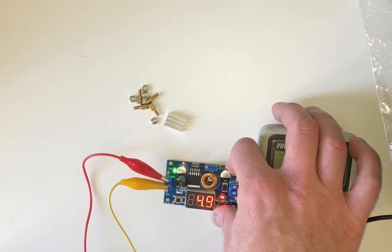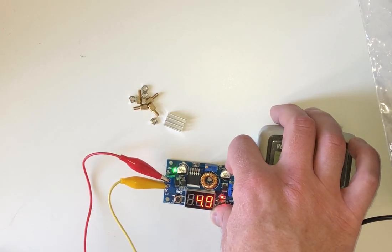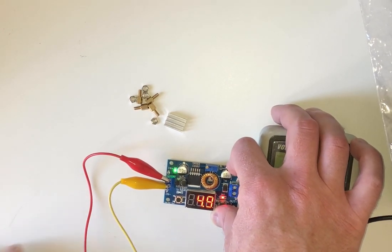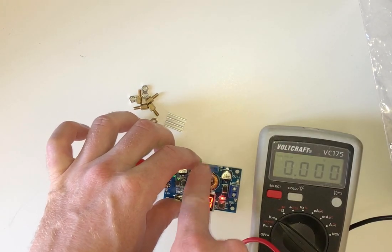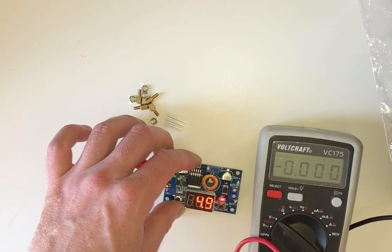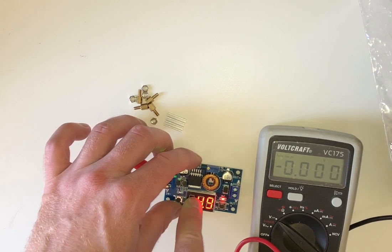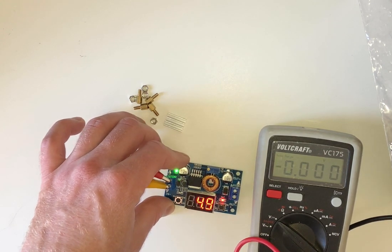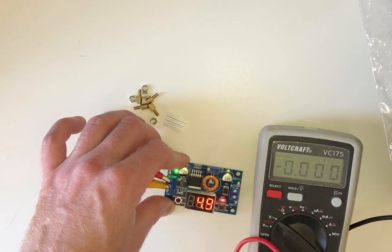So for a couple of dollars, I think it's worth just having one lying around. I think it's a bit inconvenient having this small trim pot and then buttons to change the input output voltage. So it wouldn't be my first choice, but you may as well pick it up. Why not?